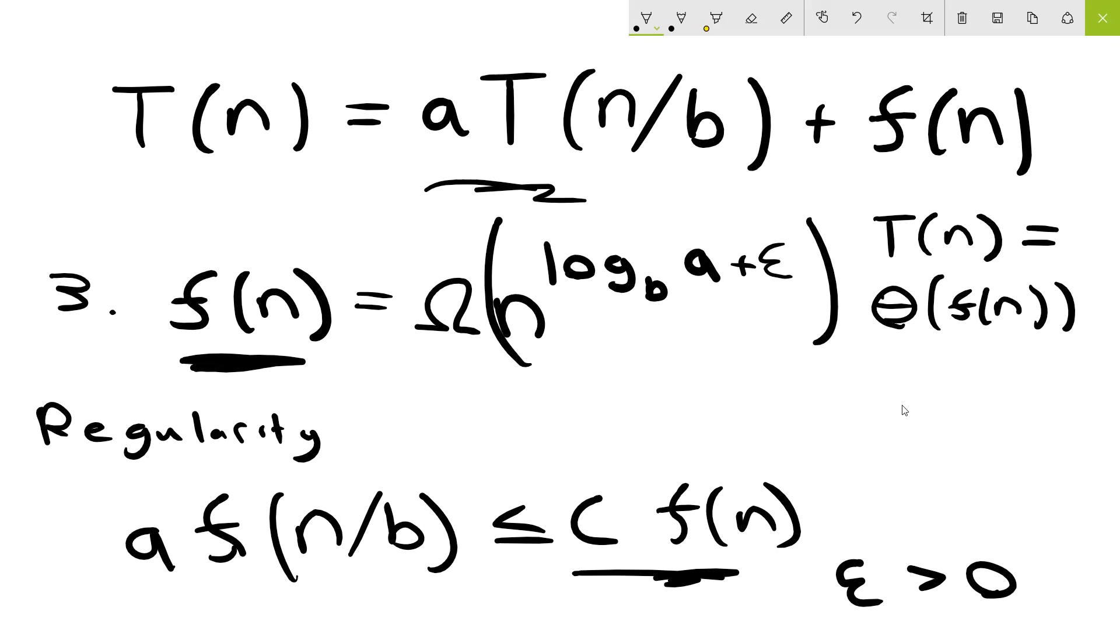And this c right here needs to be less than one. So if we can find a c that is less than one for some significantly large n and using the values of a and b that are from above, then as long as that's met, and it usually is in case three conditions, but it's always good to check, then we can use case three and say that the recurrence is bounded by f of n.